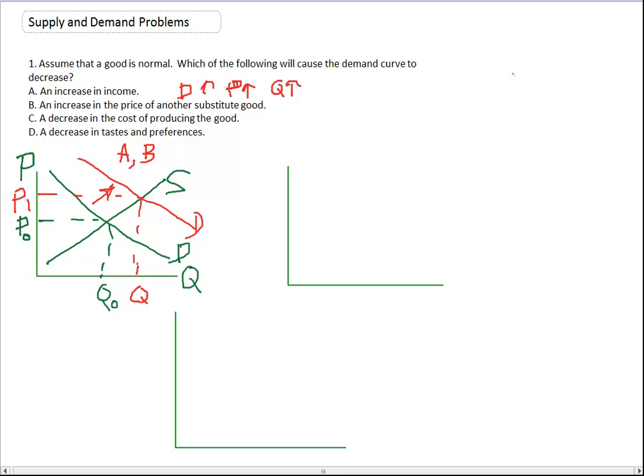Let's try C. A decrease in the cost of producing the good. Well, the cost of production are on the seller's side. It doesn't affect the demand curve. So here's our upward sloping supply curve. Downward sloping demand curve. Price on the vertical axis. Quantity on the horizontal axis. Equilibrium price right here. Here's my equilibrium quantity. And in this case, it's a decrease in cost. Well, lower cost of production. Shift my supply curve to the right.